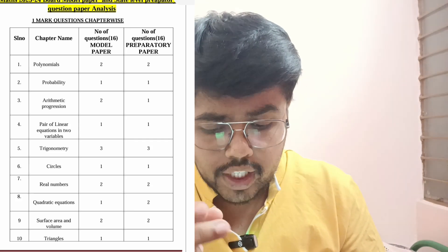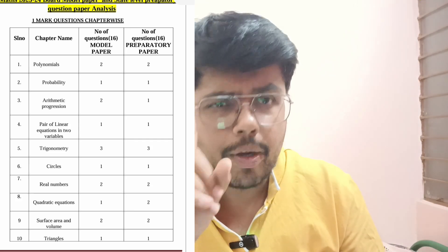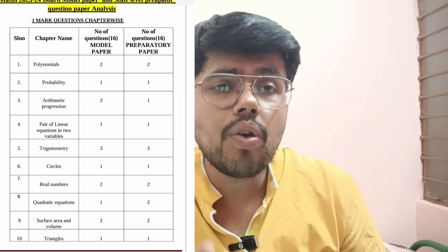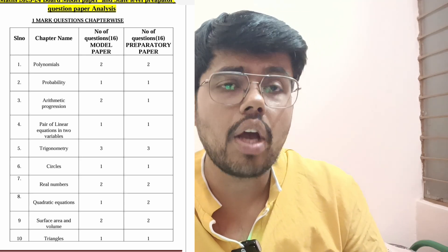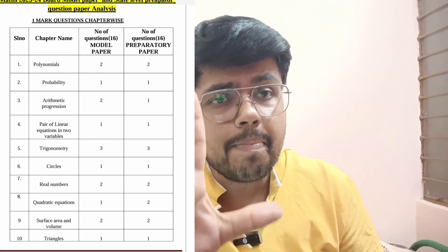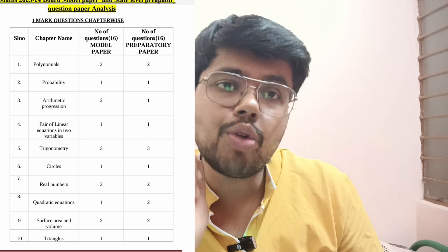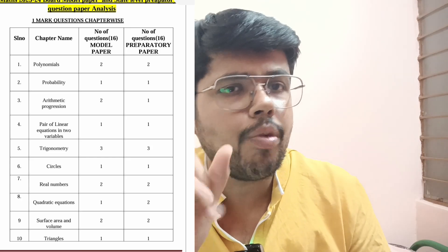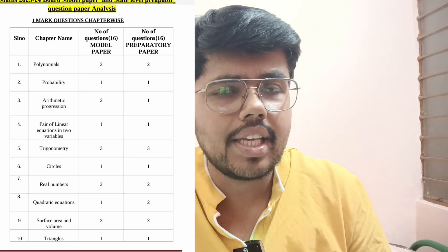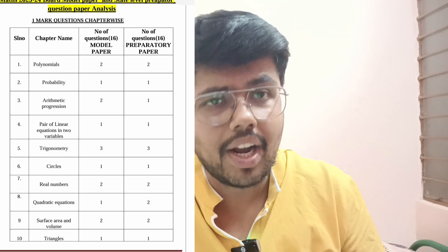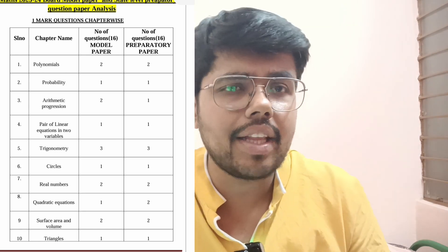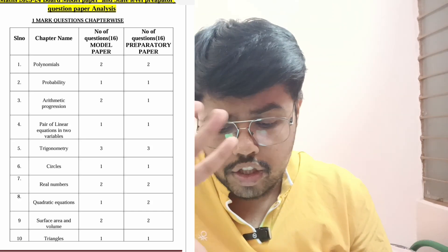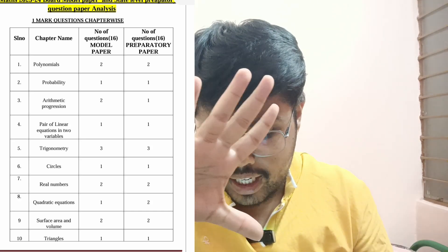Next, quadratic equation — there is one change here. In the model paper, only one question is asked. But in the preparatory paper, two questions were there. It will be simple — on the nature of roots or which among the following is a quadratic equation. Surface area and volume: two questions, directly on formulas. You should know the formula table. Frustum: one question, one formula — they will definitely ask either the CSA, TSA, or volume of a frustum, plus other solid shape formulas. Triangles: one question is asked.